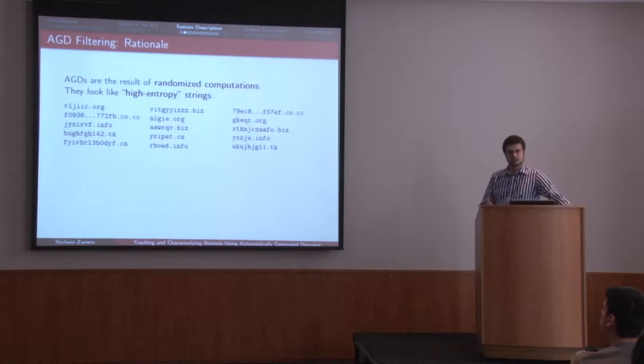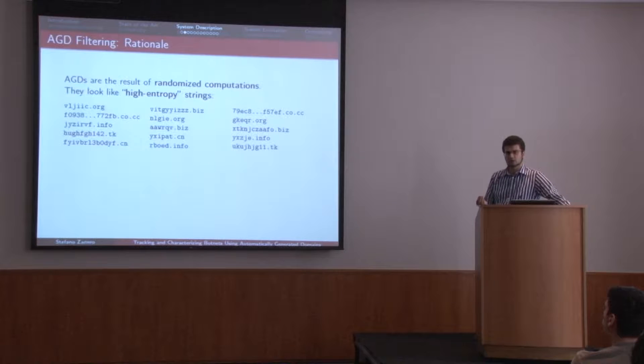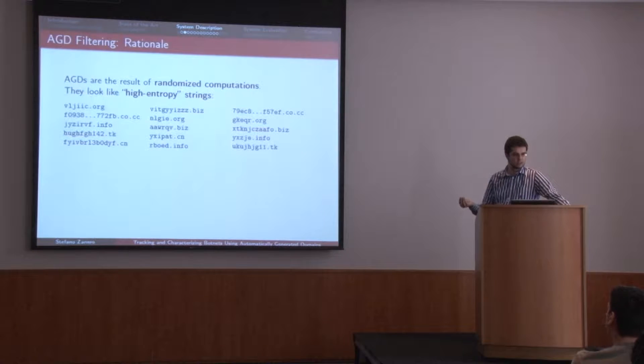Let's see the two phases. The core observation that is the basis of the system: once you have understood this, the rest is just the engineering to make it work. AGDs — automatically generated domains — are always very random-looking strings, high entropy strings. Why is that? Because as the botmaster, I want to generate domains that are possibly free.